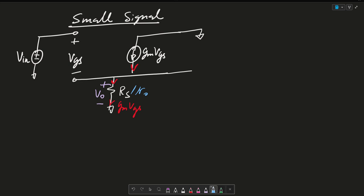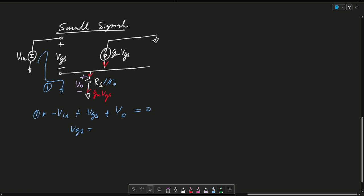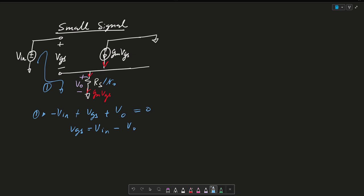I'm going to write some equations. I'm going to first write a loop equation here, a KVL. So minus Vin plus Vgs plus V0 equals zero. So then Vgs equals Vin minus V0. Next, we can consider my KCL equation, or I can consider Ohm's law. I can say then that V0 equals this resistance, RS parallel RO, times my current, which is Gm·Vgs.